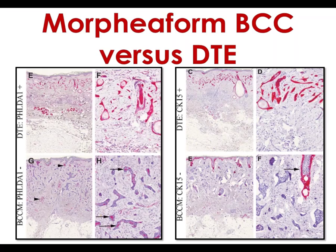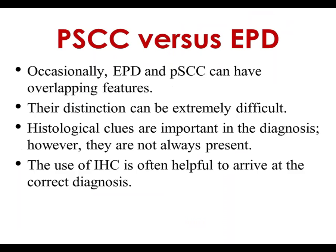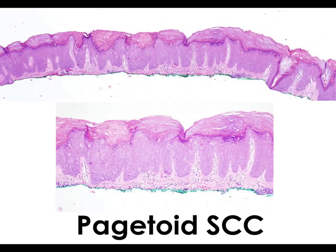Now changing topics — this is another very common problem encountered in dermatopathology almost every day: pagetoid Bowen's disease or pagetoid squamous cell carcinoma in situ versus extramammary Paget's disease. Both entities can show overlapping features and depending on the clinical context it can be quite challenging to make a diagnosis on plain H&E alone. Immunohistochemistry is very useful here. Here we have an example of pagetoid squamous cell carcinoma in situ — look at the full thickness of epidermis and the single cells. If you see this in a sun-exposed area, you just call it squamous cell carcinoma in situ.